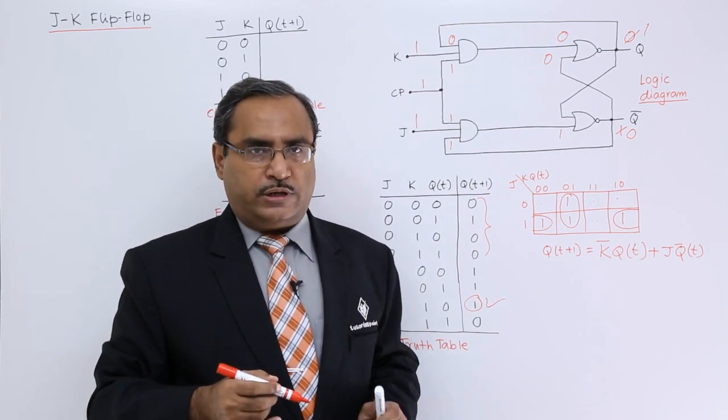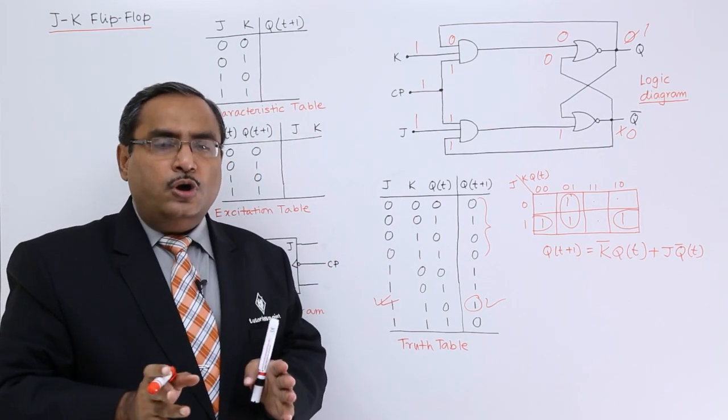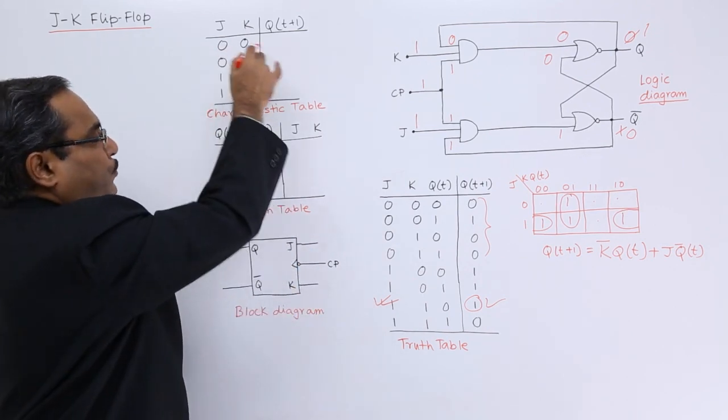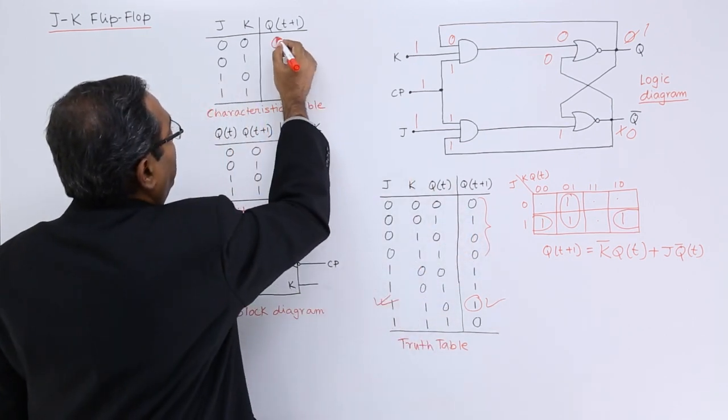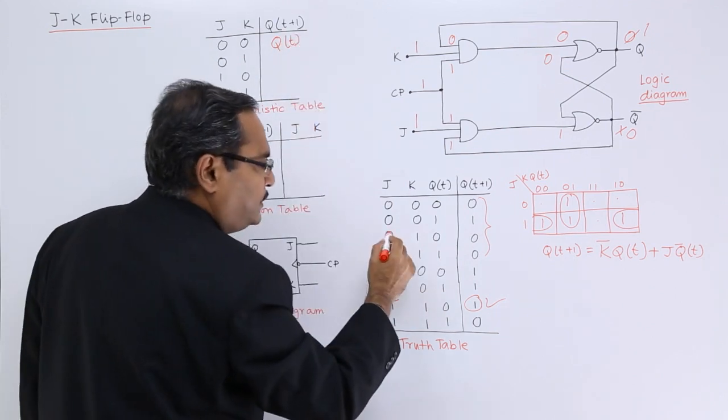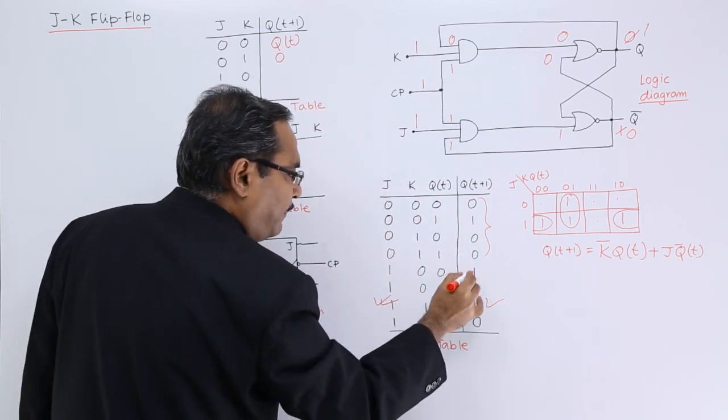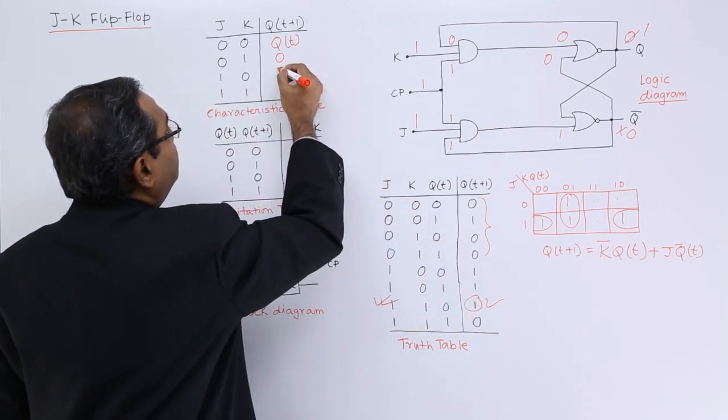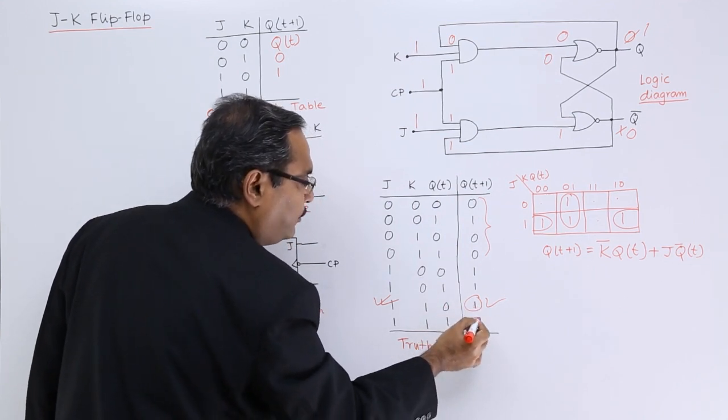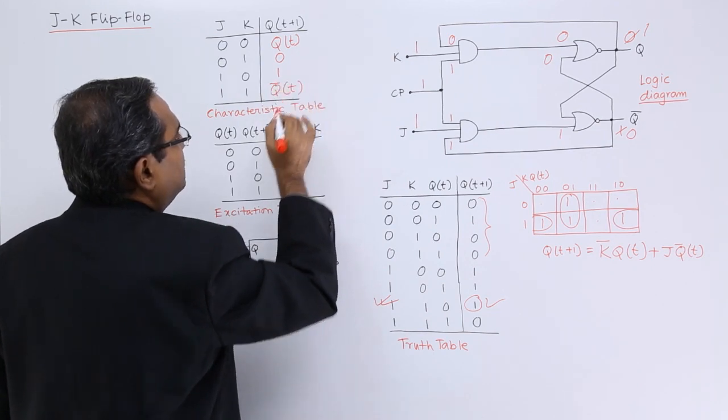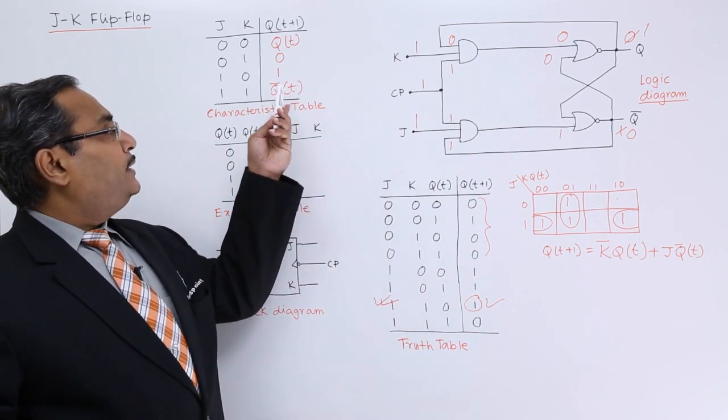Now, let us go for the other two table constructions. Next table is the characteristic table where we shall find out what will be the output when certain input is known to us. For 0,0 input I am finding here we are having 0,0, so the previous output we are getting. I am writing this one as Q(t). For 0,1 I am finding this one as 0. For 1,0 I am finding this one as 1 and for 1,1 I am finding this one as when it was 0, it will be 1, when it was 1, it will be 0. So it will be Q bar(t). That means, the previous output will get complemented if I provide 1,1 to J and K inputs. In this way the characteristic table we have done.